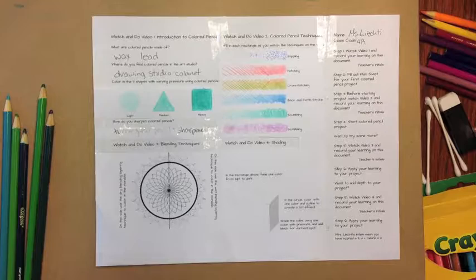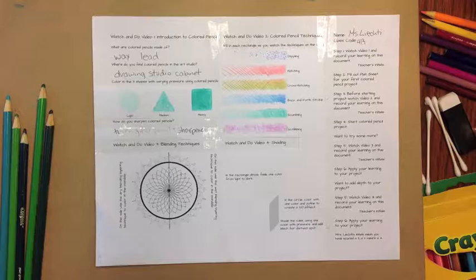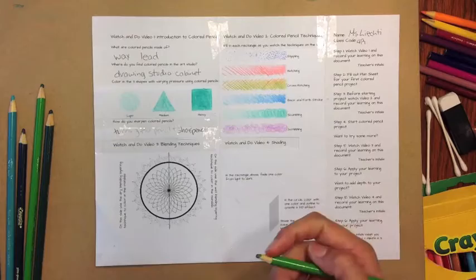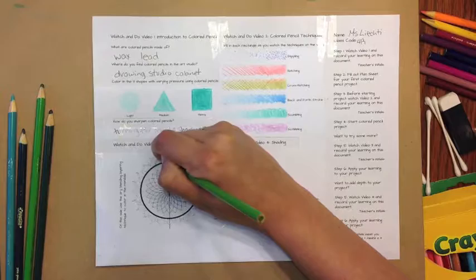When blending, always start with the lighter color. Darker colors will cover it up, but lighter colors won't cover up the darker colors. I'm going to go here to this green, and I am going to start coloring in this shape.